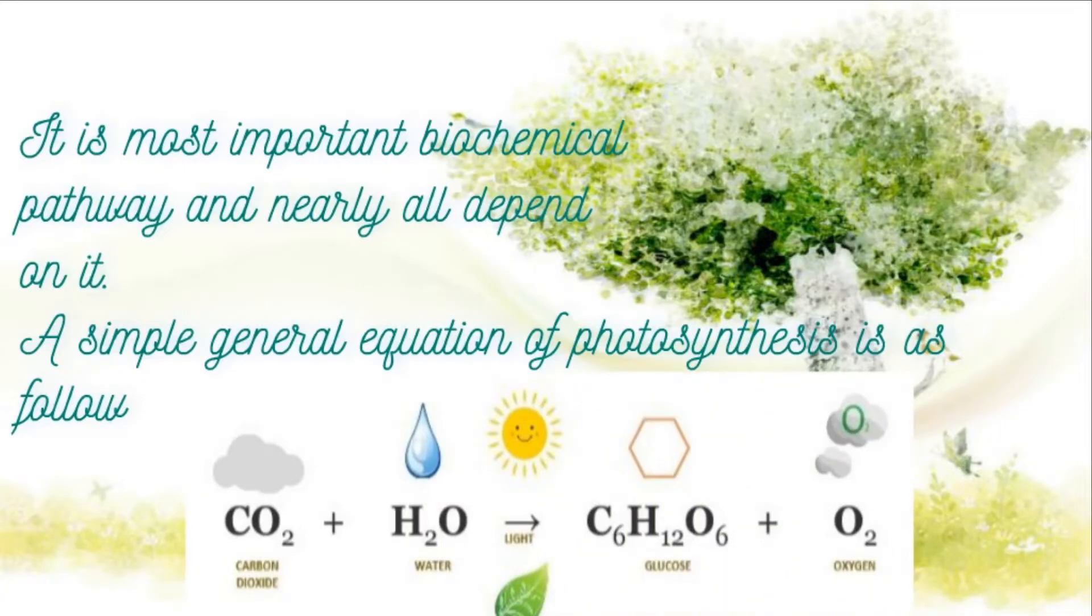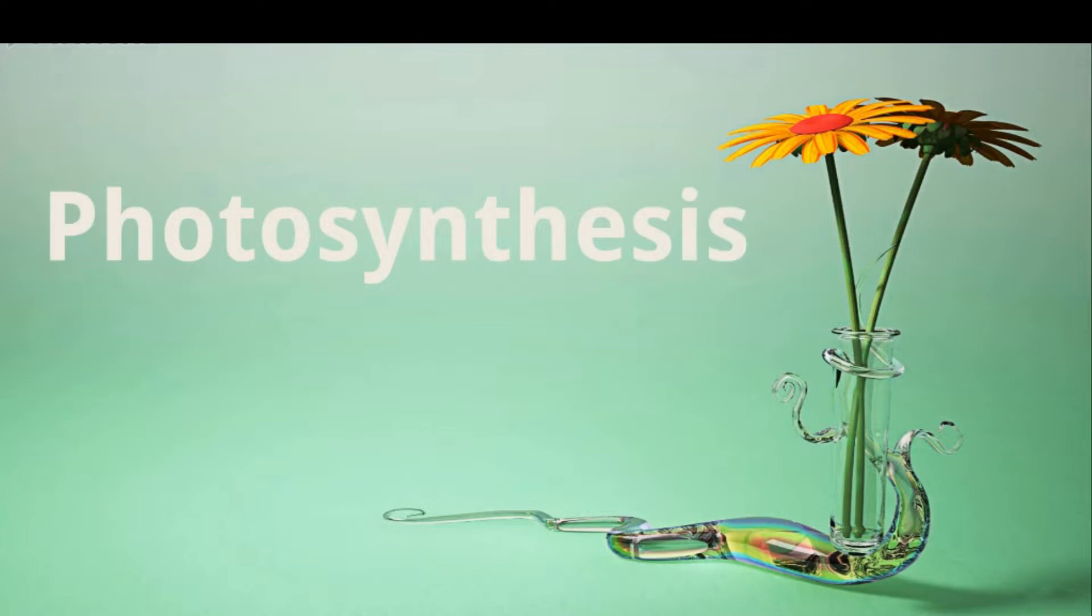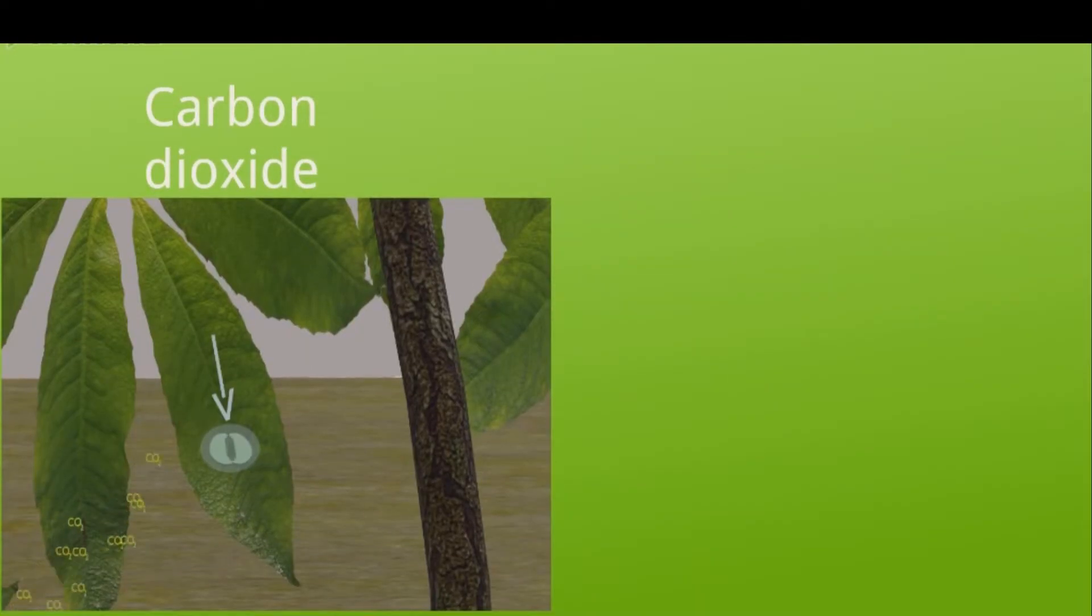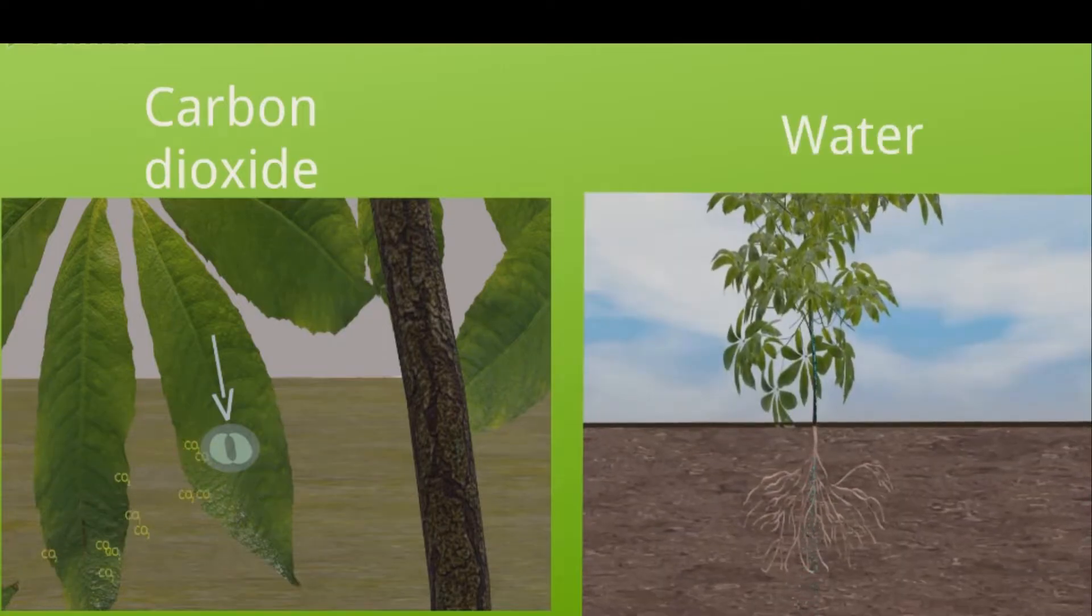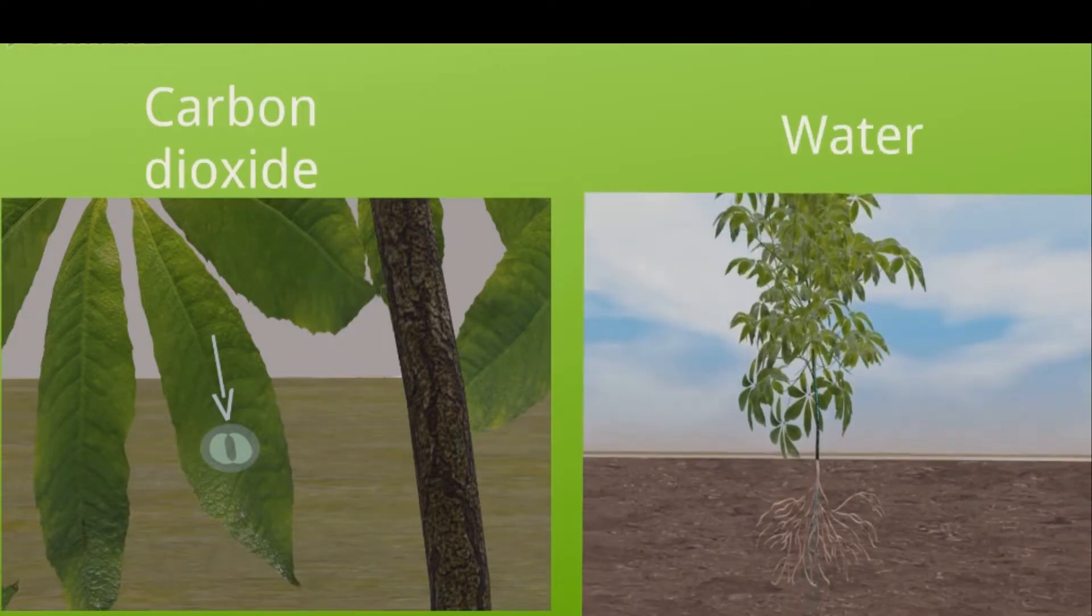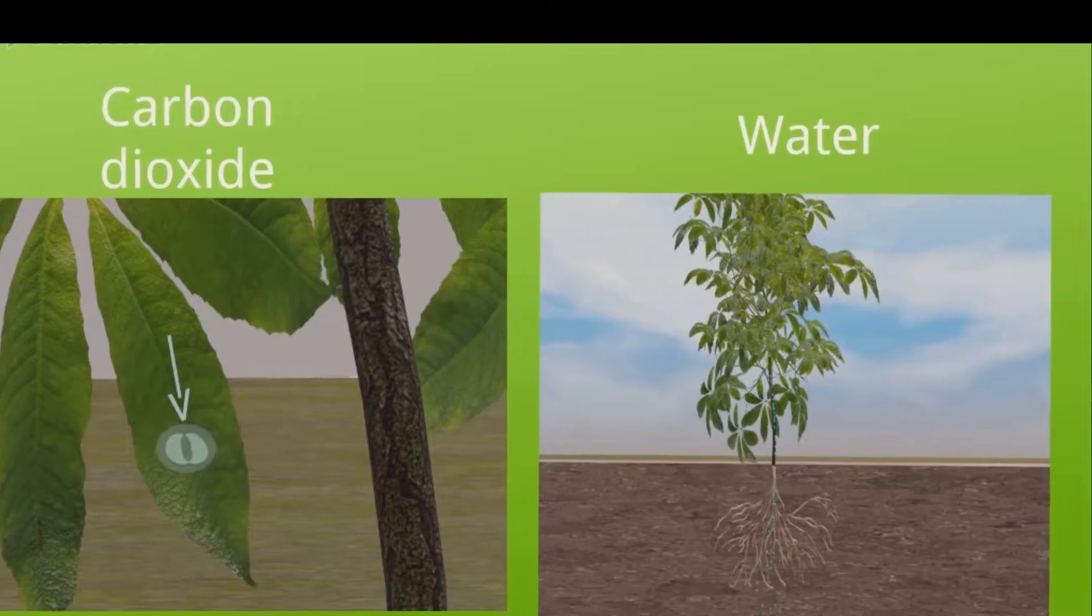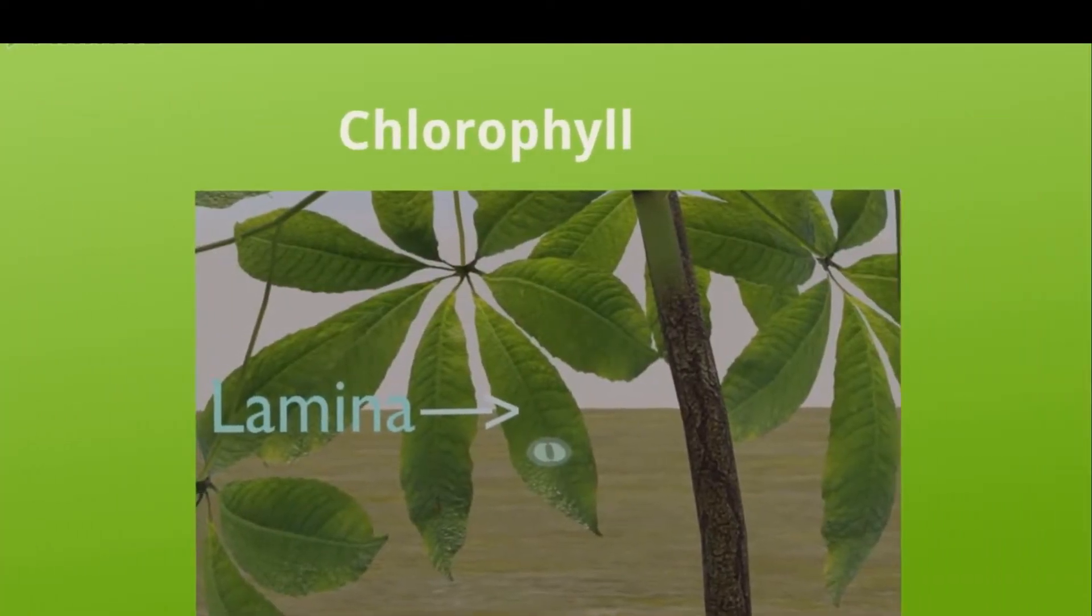During the process of photosynthesis, the raw materials are: carbon dioxide enters through the stomata, water is absorbed by the root hairs from the soil and is carried to the leaves through the xylem vessels, and chlorophyll absorbs the light energy from the sun.